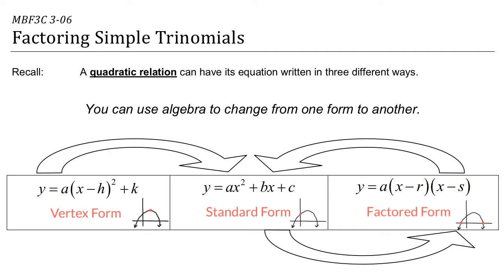If you need a refresher on that, just let me know and I can go through it with you. In Spiral 2, we looked at how to change the vertex form into standard form, and the factored form into standard form. The method we used to do that was called expanding. In this lesson, we're going to look at changing the standard form into the factored form, and that method is called factoring.